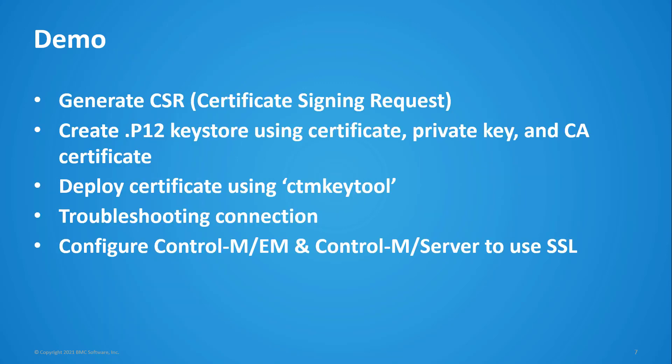In the demo, we will be performing the following. First, we will generate the CSR, known as the certificate signing request. Then we will create a P12 keystore using the certificate, private key, and CA certificate. Next, we will deploy the certificate using the CTM key tool utility. Next, we will troubleshoot and test the connection before making the changes for the Control-M configuration on the Enterprise Manager and Server. Lastly, we will configure the Enterprise Manager and Server to use SSL.